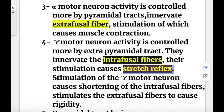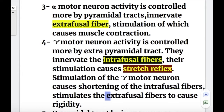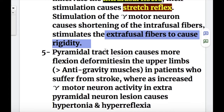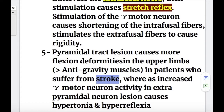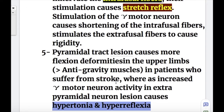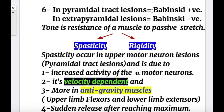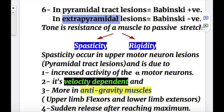Stimulation of the gamma motor neuron causes shortening of the intrafusal fibers and stimulates the extrafusal fibers to cause rigidity. Number five, pyramidal tract lesions cause more flexion deformities in the upper limb because they affect more anti-gravity muscles in patients who suffer from stroke. Increased gamma motor neuron activity in extrapyramidal lesions causes hypertonia and hyperreflexia. Number six, in pyramidal tract lesions the Babinski sign is positive, and in extrapyramidal tract lesions Babinski is negative.